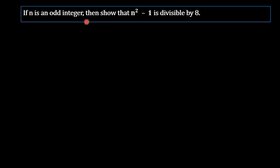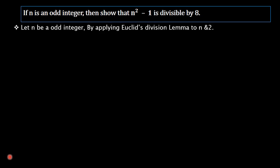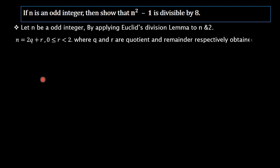We are going to use Euclid's Division Lemma to prove this result. Let n be an odd integer. Applying Euclid's Division Lemma to n and 2, we get n = 2q + r, where 0 ≤ r < 2, and q and r are the quotient and remainder respectively obtained by dividing n by 2.